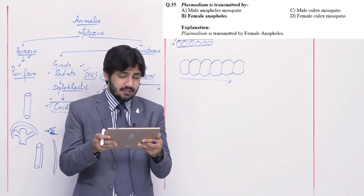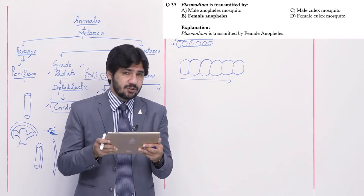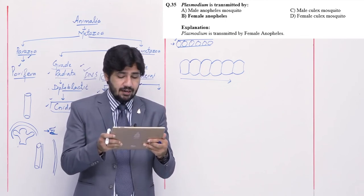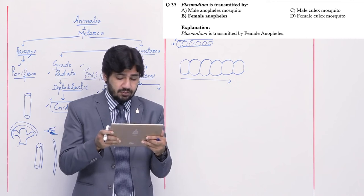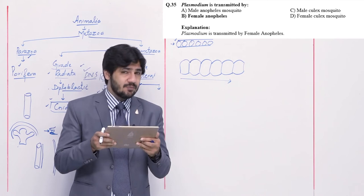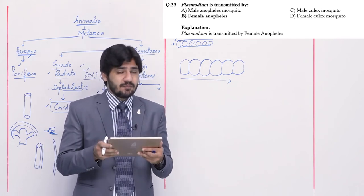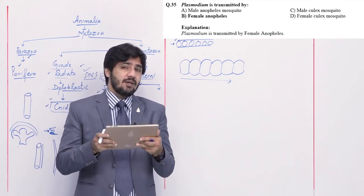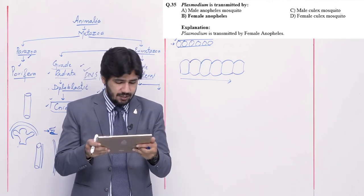Question number 35: Plasmodium is transmitted by — alpha male Anopheles mosquito, beta female Anopheles mosquito, charlie male Culex mosquito, or delta female Culex mosquito. The vector for Plasmodium is the female Anopheles mosquito. Right option is beta.